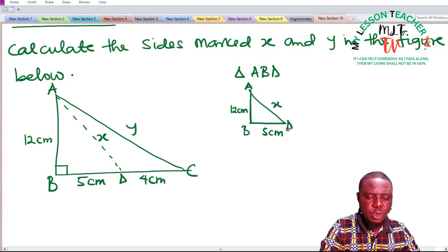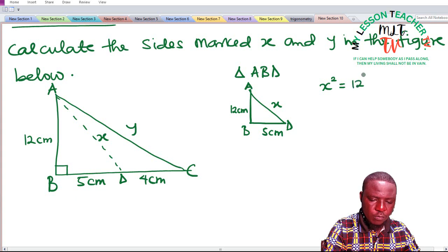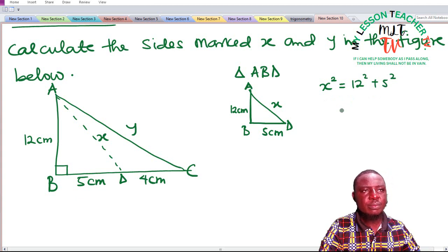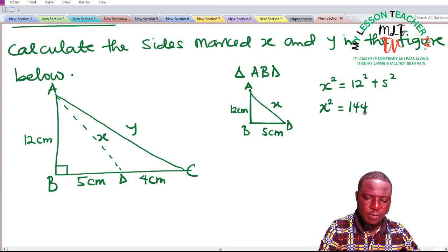Now we have the hypotenuse side which we are asked to find, which is the unknown. So we already know that x squared is equal to 12 squared plus 5 squared, applying Pythagorean theorem. So what is x? We shall then simplify by saying x squared is equal to 12 squared, which is 144, plus 5 squared, which is 25.